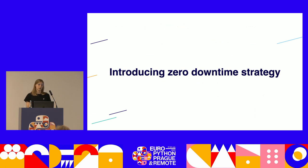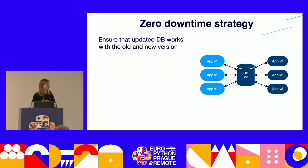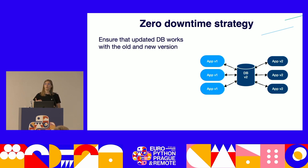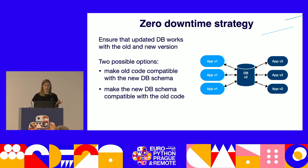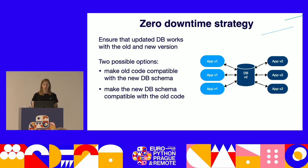Now that we know the problems, let's look at the solutions. The biggest difficulty in upgrading is changing the database, as it's a shared resource we cannot just clone and replace. To ensure zero downtime, the updated database must work with both the old and new versions of the system. There are two possible options: make the old code compatible with the new database schema, or make the new database schema compatible with the old code. Fixing old code is hard and requires crafting two releases, so we chose the second path as it is easier. One important assumption: we ensure zero downtime only when changing one version at a time — upgrading from V1 to V2 is possible without downtime, but switching from V1 to V3 won't be.